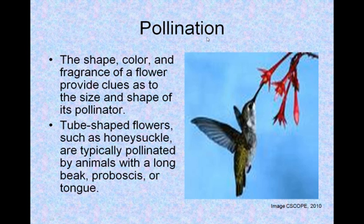Pollination is the main purpose of the flower. The shape, color, and fragrance of a flower provide clues as to the size and shape of its pollinator. Tube-shaped flowers, such as honeysuckle, are typically pollinated by animals with a long beak, proboscis, or tongue.